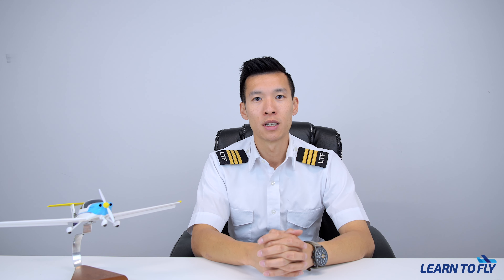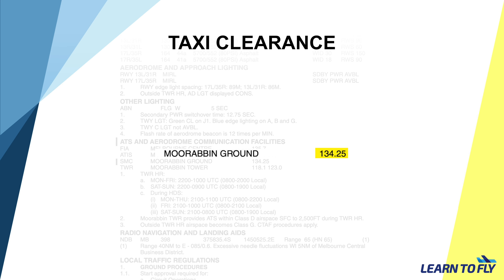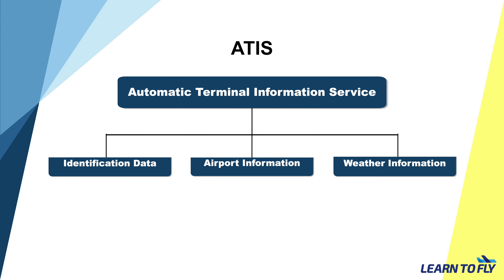What does that runway number stand for? For runway 17, the runway heading is very close to 170 degrees magnetic — the actual heading is 164. For runway 35, it's very close to 350 — the actual heading is 344. And for runway 13 and 31, the actual headings are 130 and 310.